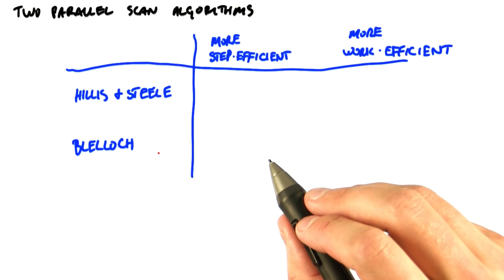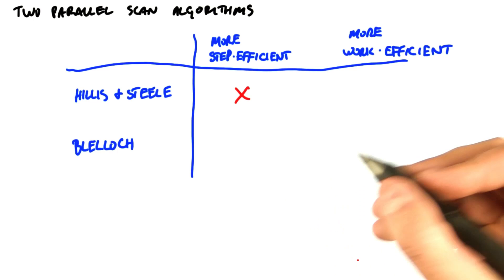Hillis and Steele's formulation of scan is more step efficient than Blelic's, but Blelic's formulation is more work efficient than Hillis and Steele's. They're both quite relevant today in parallel computing, and I hope you find their implementations as interesting as I do.